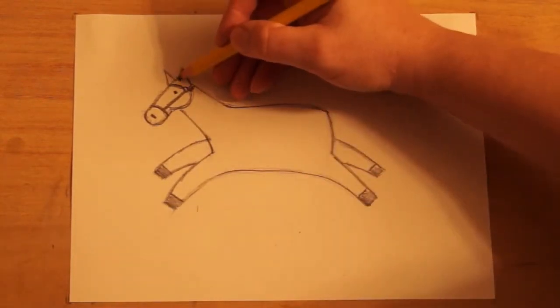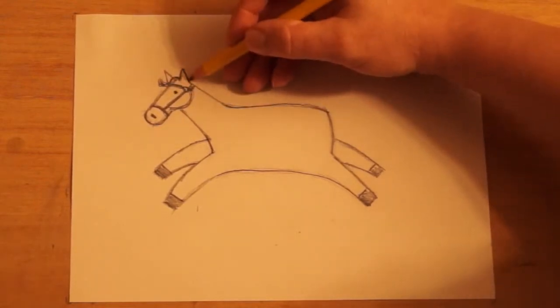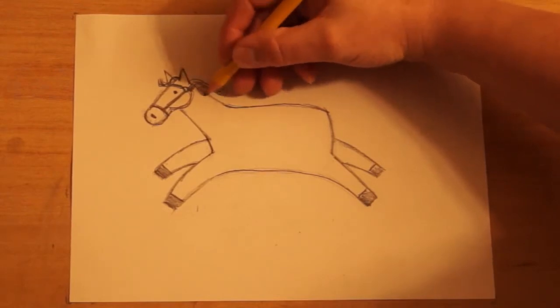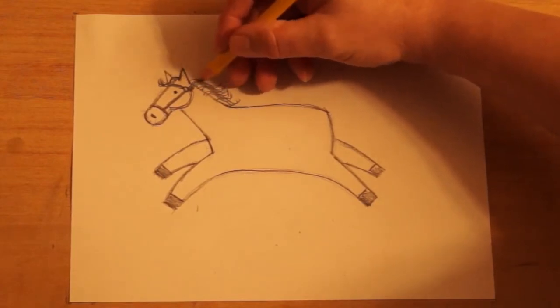And let's make some mane. I'm going to make a little bit of hair coming off the front between the ears. And on the back, the horse is in motion. So I want to make the mane wavy all the way down because it's in motion and it's going fast. So the mane is flowing in the wind, flying in the wind.